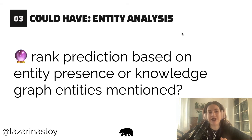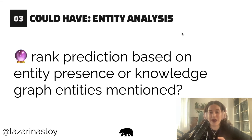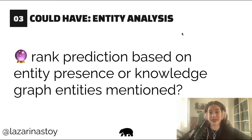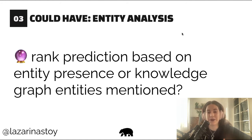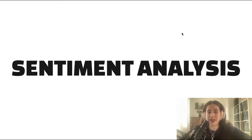In the could-have section, we can get into actual machine learning: rank prediction based on entity presence or knowledge graph entities mentioned. To do this you need a very large historic dataset that you could train a model on in order to predict. That's an important caveat.